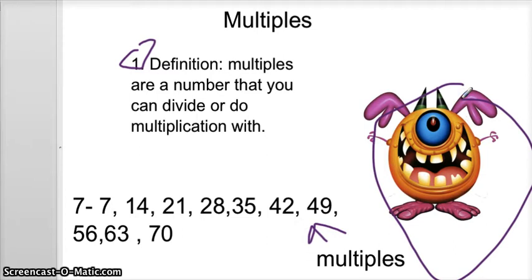Okay, so this is my multiplication song for the multiples of seven. One, two, three. Seven, fourteen, twenty-one, twenty-eight, thirty-five, forty-two, forty-nine, fifty-six, and sixty-three. And the last one of all is seventy.